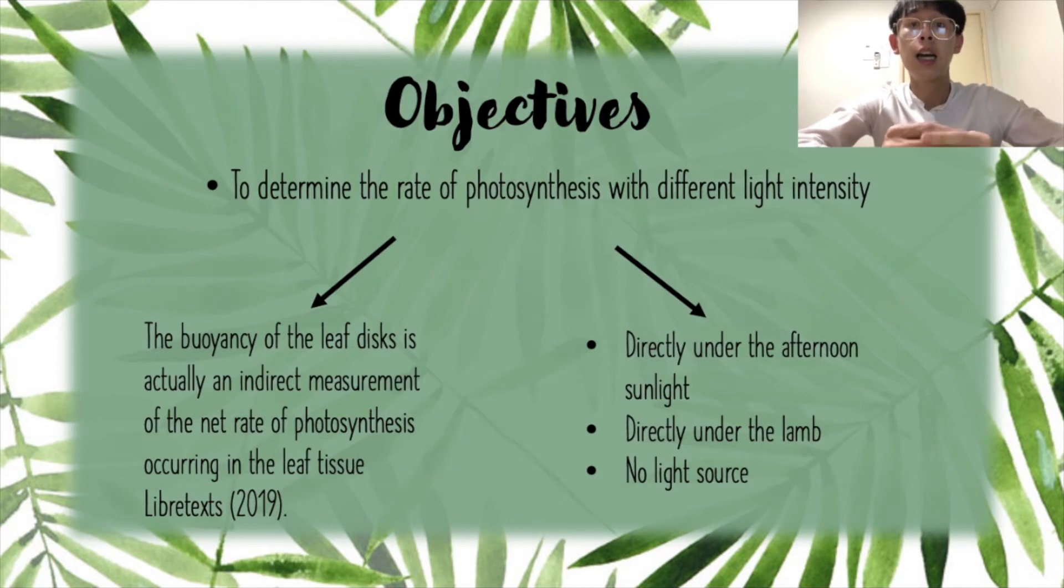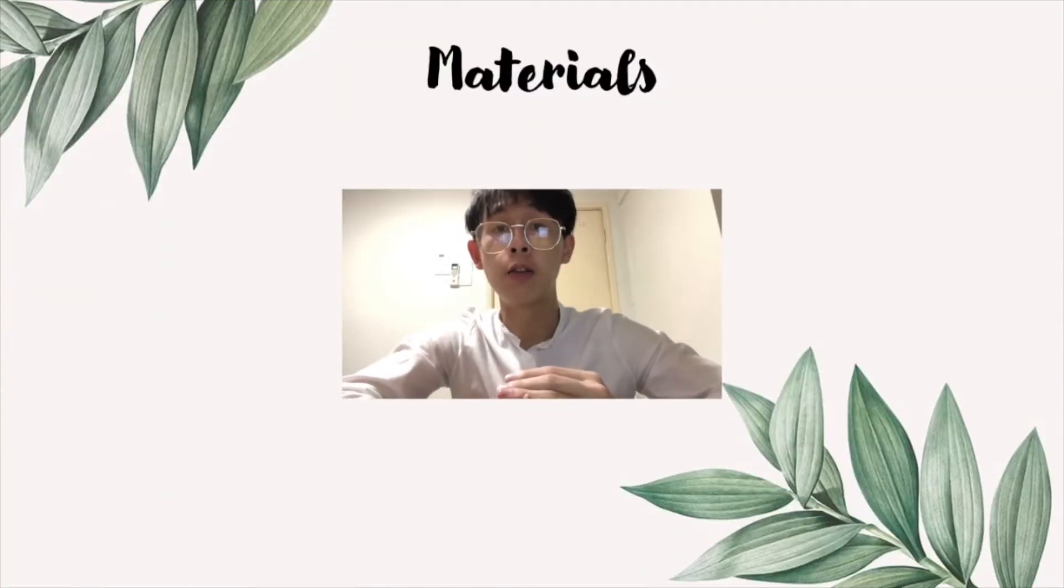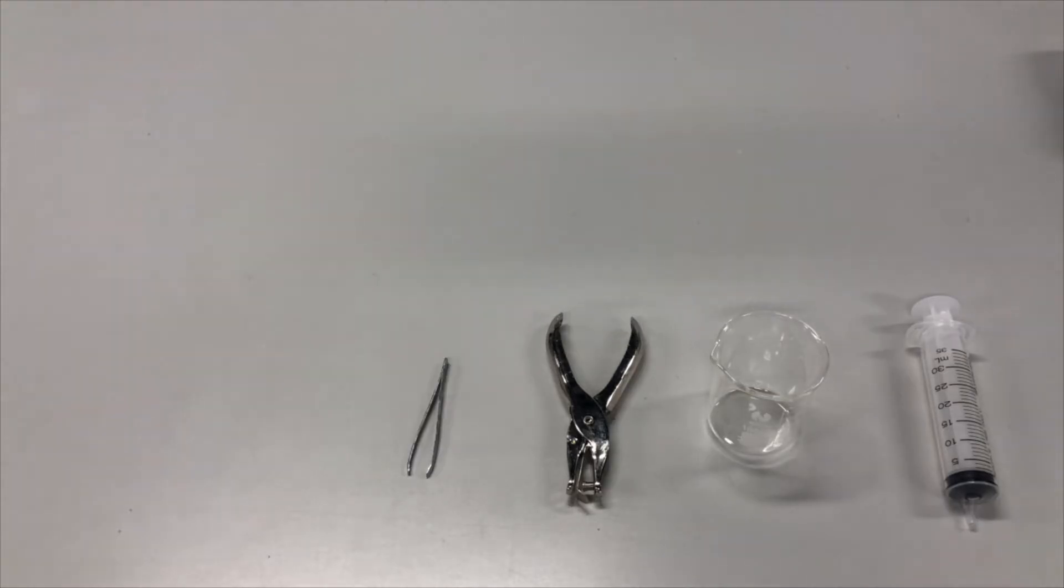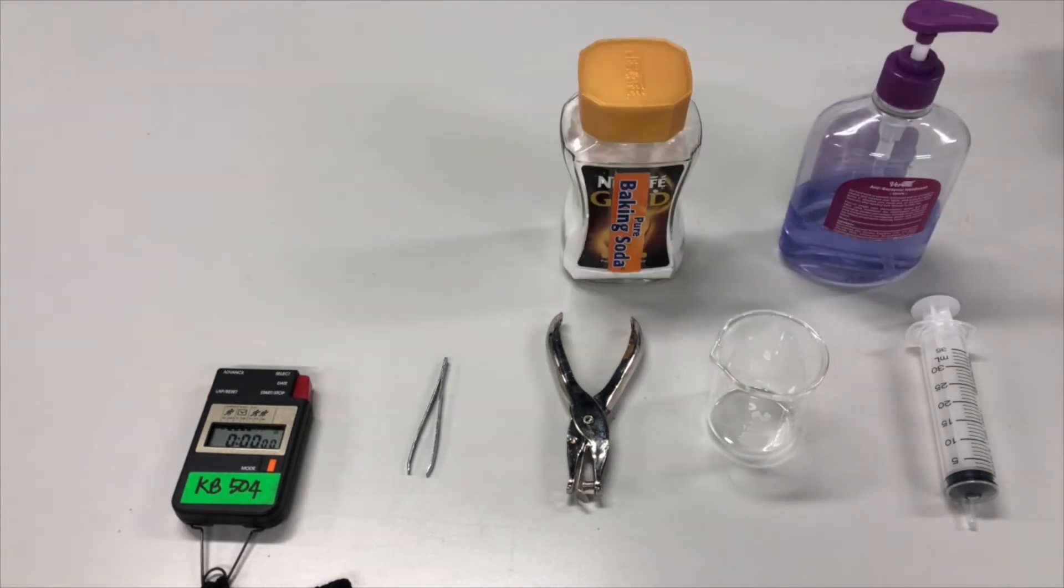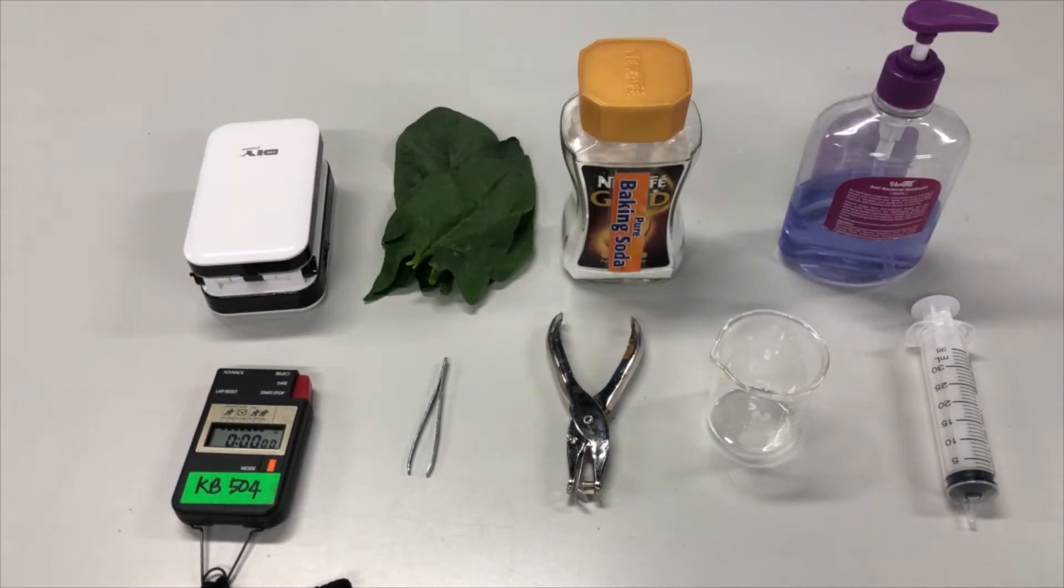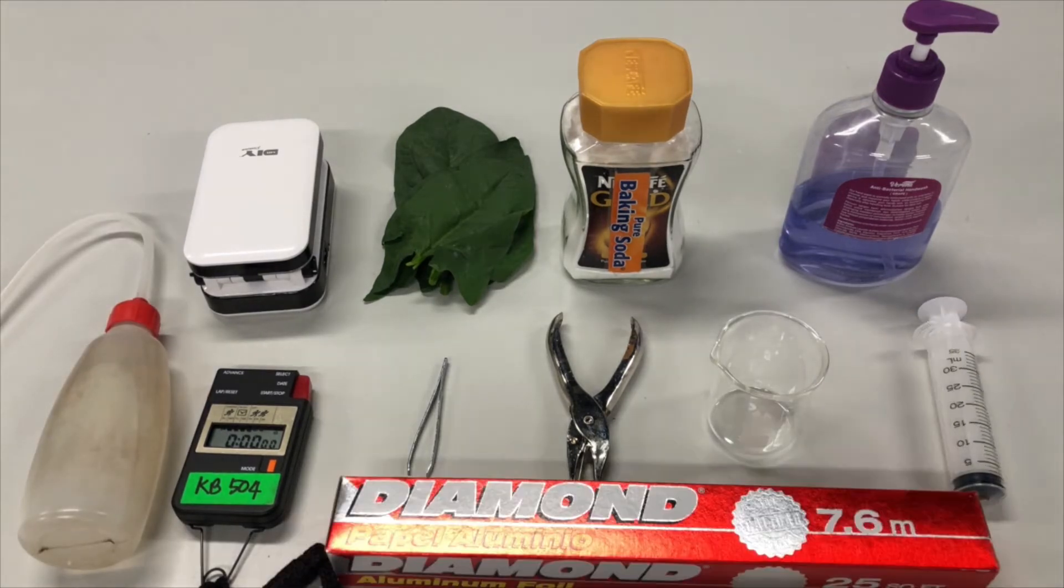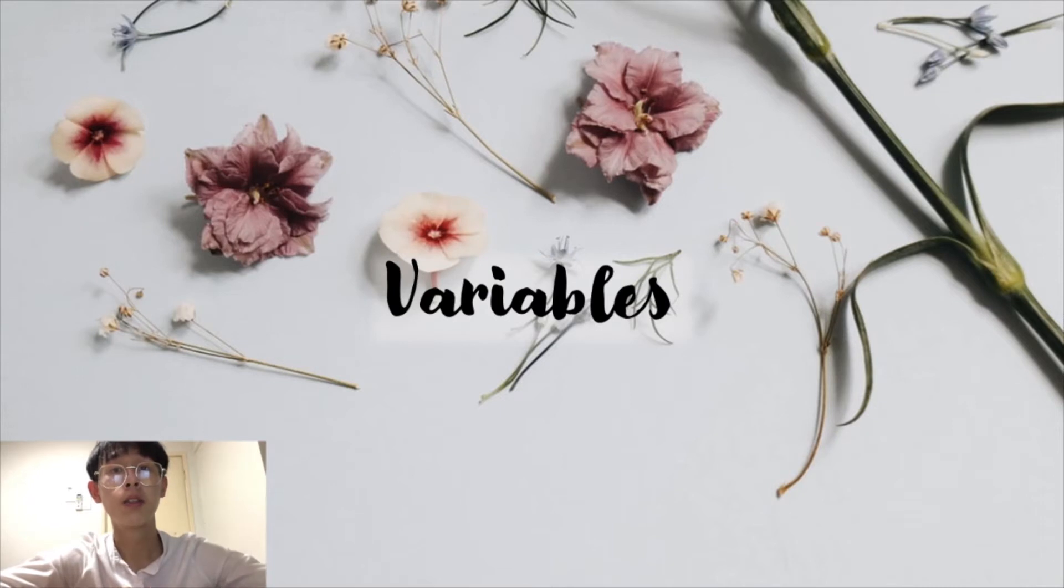We are also going to use different light intensity in this experiment. Such as directly under the afternoon sunlight, directly under the lamp, and finally, no light source. Materials: There are several materials that we are going to prepare for this experiment. Syringe, Beaker, Hole puncher, Tweezers, Stopwatch, Liquid dishwasher, Baking soda, Spinach leaves, Desk lamp, Distilled water, Aluminum foil.